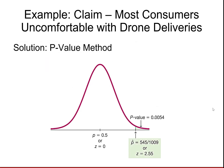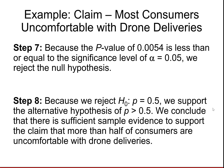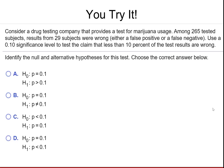This gives you a pictorial of what that looks like. We're far away from the middle of the distribution — more than two standard deviations from where we hypothesize the mean of the distribution would be at 0.5. Because the p-value of 0.0054 is less than or equal to the significance level of 0.05, we reject the null. We can conclude there is sufficient sample evidence to support the claim that more than half of consumers are uncomfortable with drone deliveries.